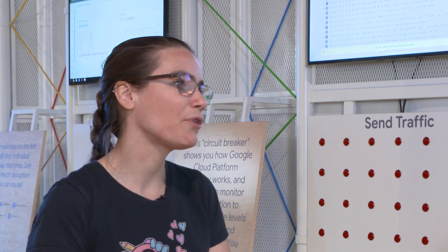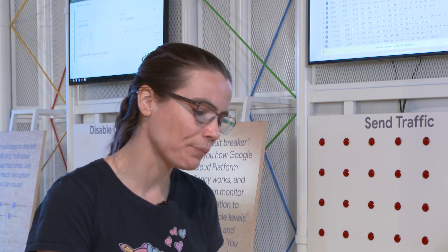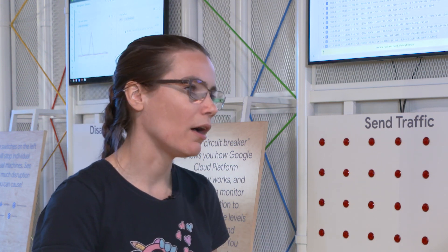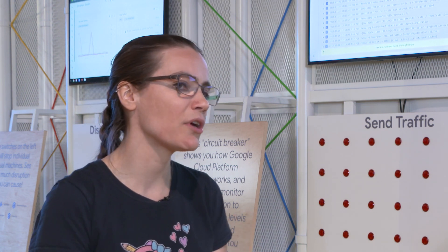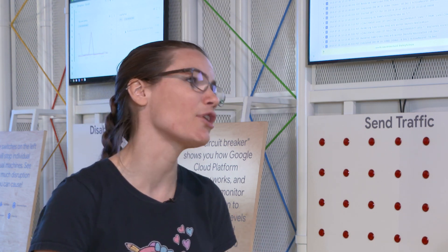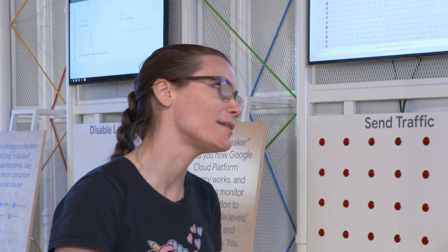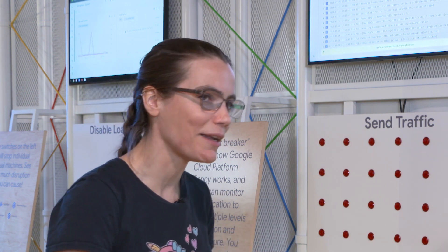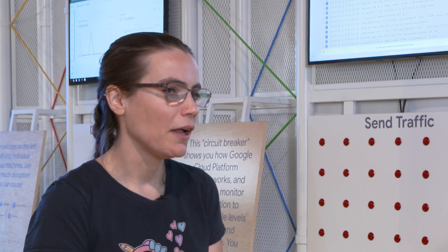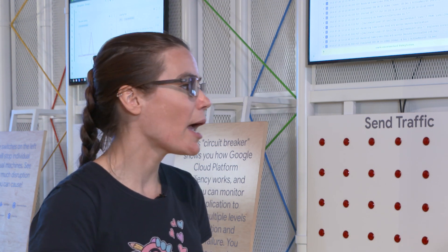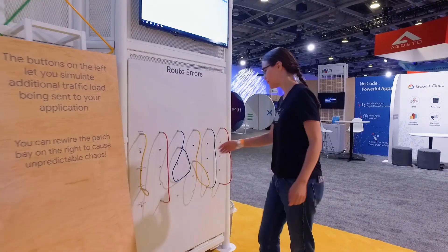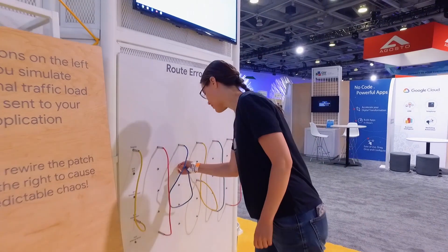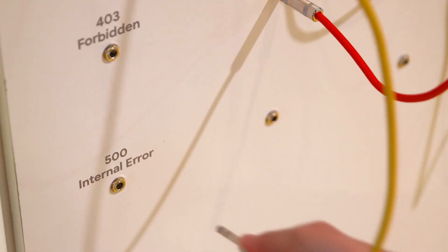We have Kubernetes, obviously, as the app that we're running. I am using Compute Engine to run a cron job that puts everything back together after the attendees break it. And I'm using App Engine as a test harness so that I could build this independently of the manufacturing of the demo.